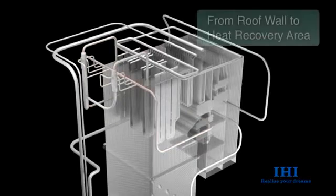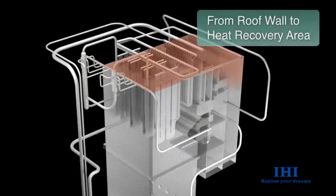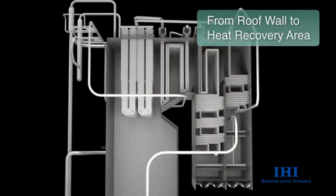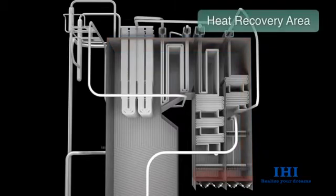The steam from the steam separators is sent to the heat recovery area through the furnace roof wall tubes. After passing through the rear wall, the steam is split into three main paths in the front wall.